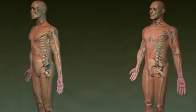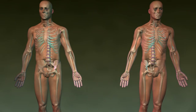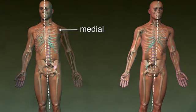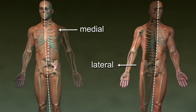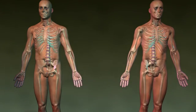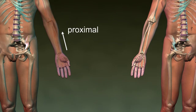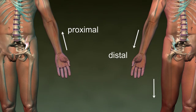Lateral and medial refer to directions toward or away from the midline or mid-sagittal plane. Medial means toward the midline of the body, while lateral means away from the midline. The terms proximal and distal are used to compare relative positions of parts of the arm or leg. Proximal means closer to the trunk or point of attachment, while distal is away from the trunk. The thigh is proximal to the knee.